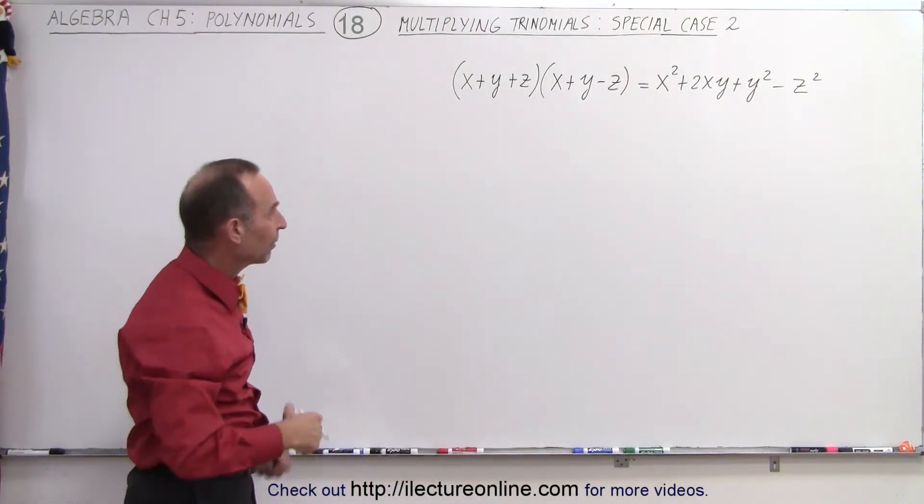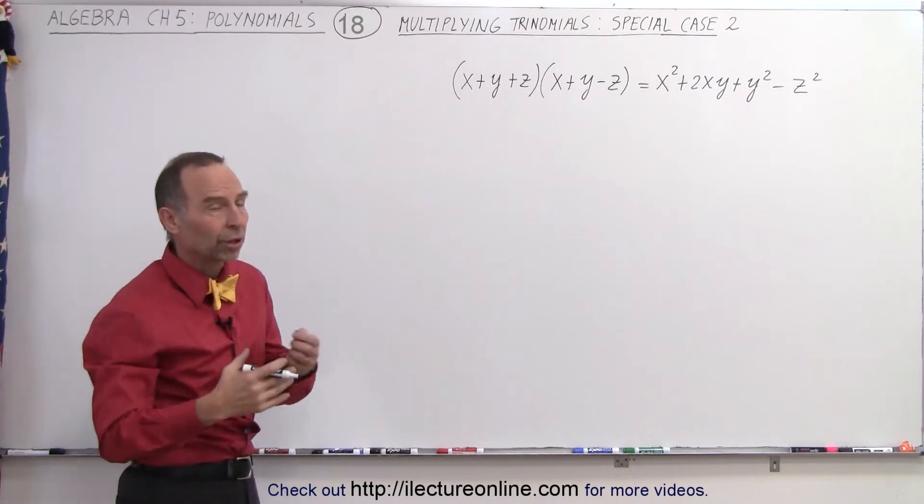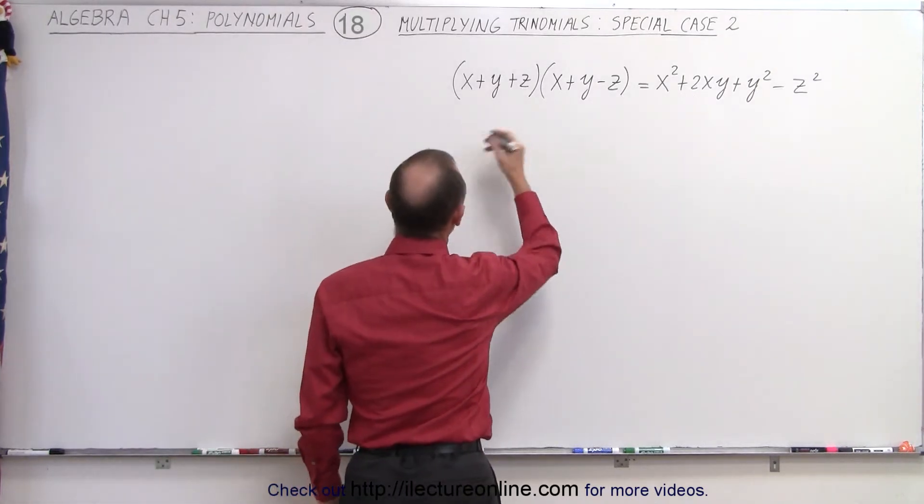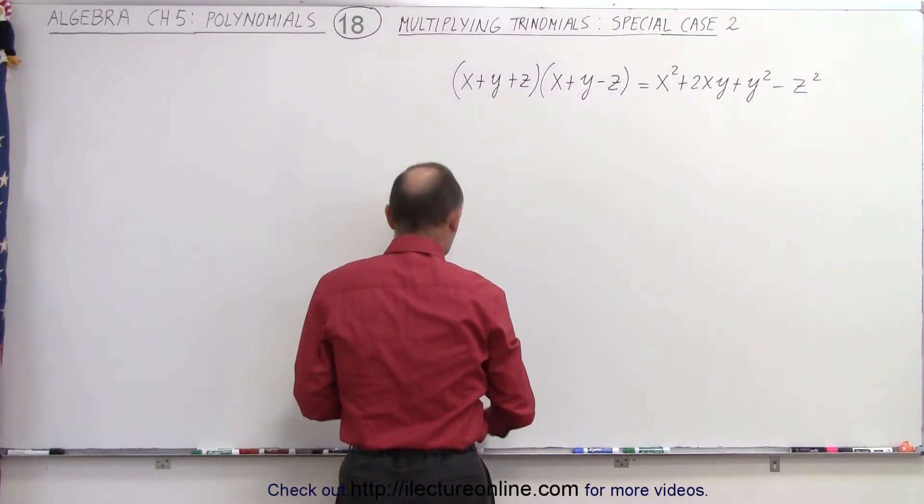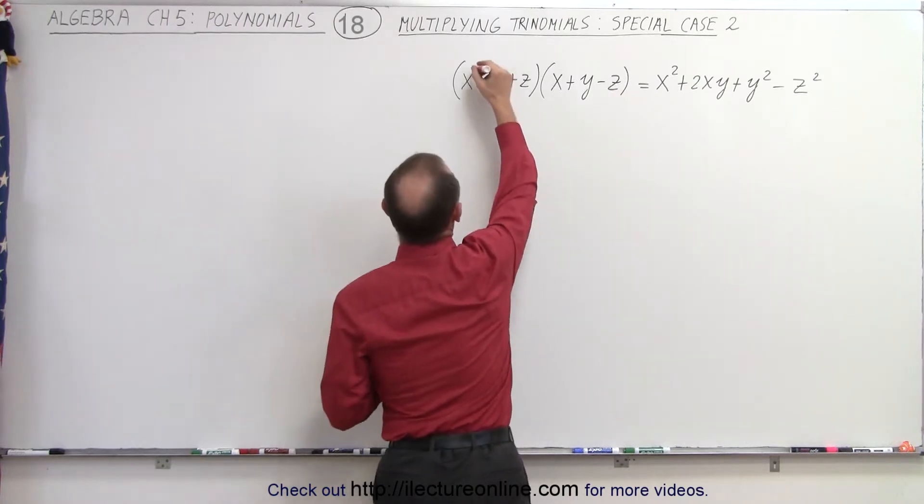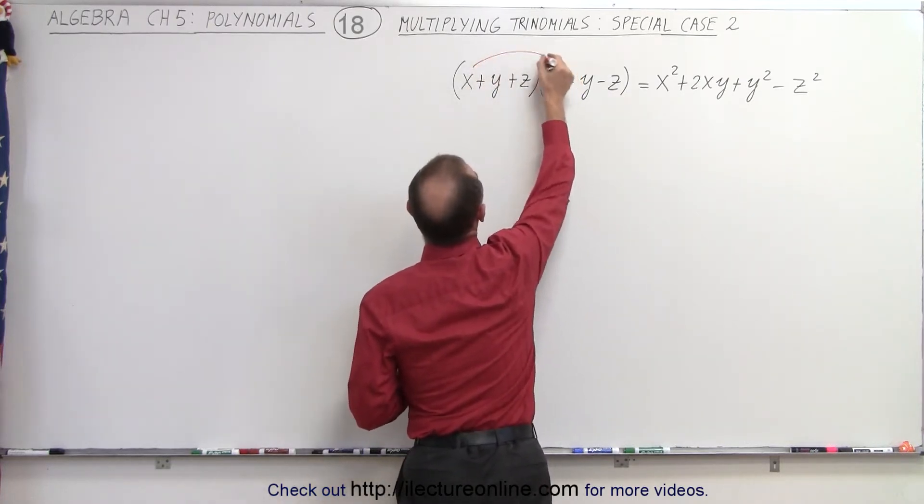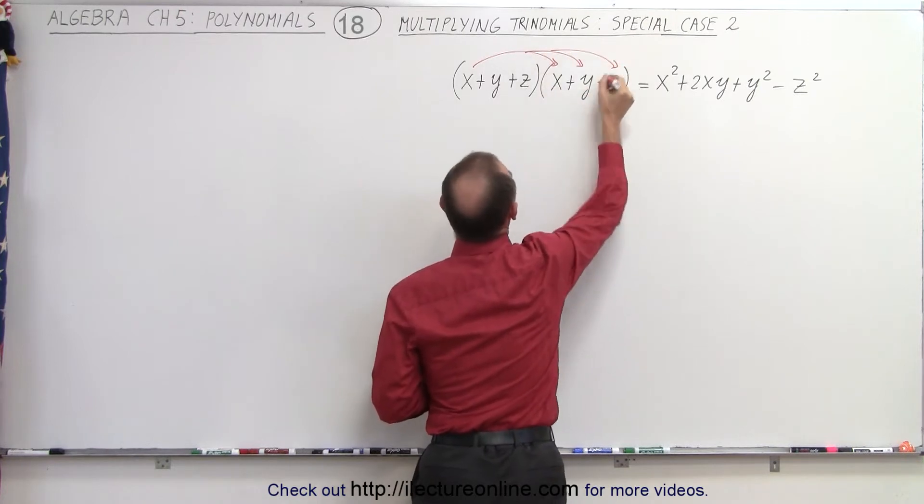Just so you can see how that's obtained, let's go ahead and actually work that out. So if we're going to multiply those together, what we can do is we can take the first term and multiply it times each of the terms in the second trinomial.